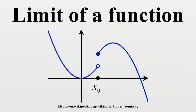Sometimes this criterion is used to establish the non-existence of the two-sided limit of a function on ℝ by showing that the one-sided limits either fail to exist or do not agree. Such a view is fundamental in the field of general topology, where limits and continuity at a point are defined in terms of special families of subsets called filters, or generalized sequences known as nets. Alternatively, the requirement that Y be a Hausdorff space can be relaxed to a general topological space, but then the limit of a function may not be unique, and one can only speak of a limit or the set of limits at a point.